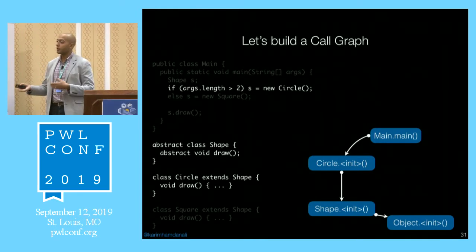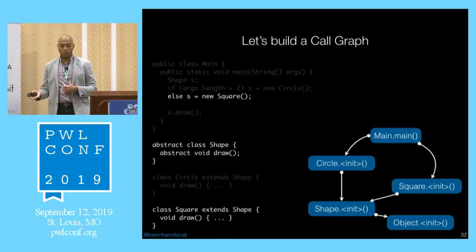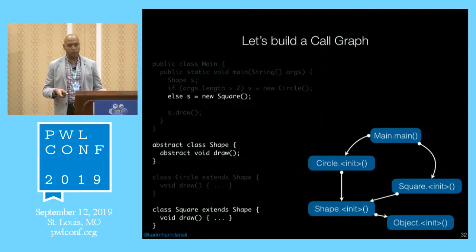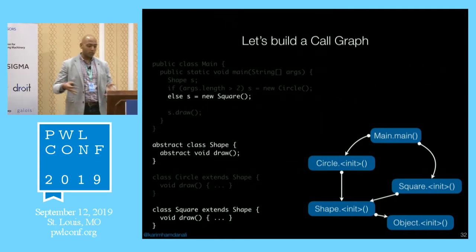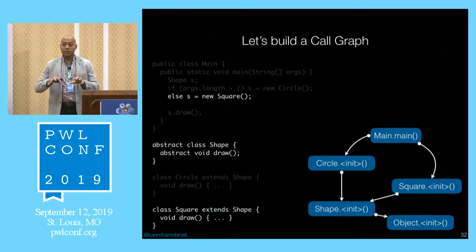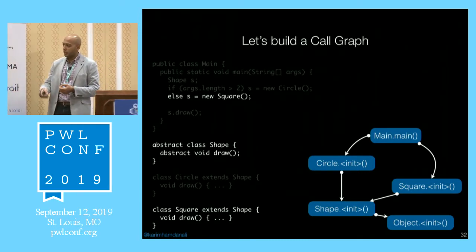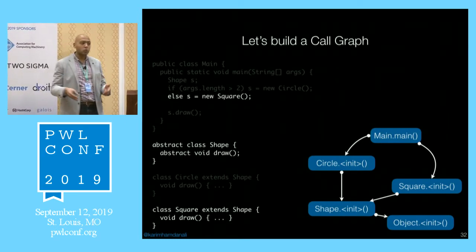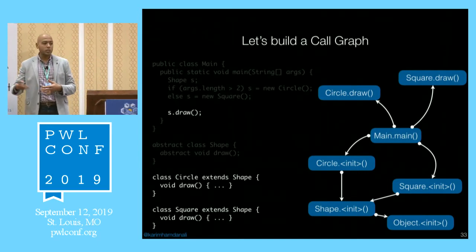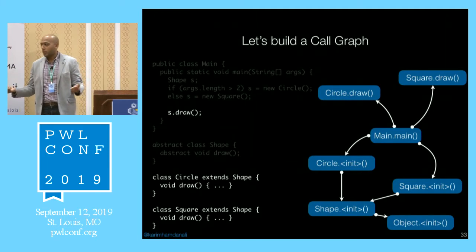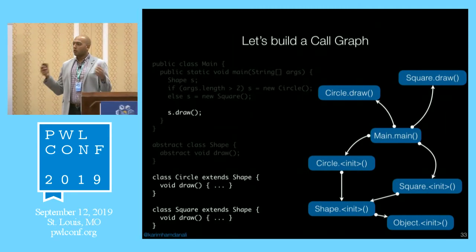Because we do program analysis, we reason about all possible execution paths. The last statement s.draw — since we have objects of type Circle and Square — the analysis thinks the call could dispatch to either Circle.draw or Square.draw. So we have a call graph for that Java program. We're trying to abstract away from actual runtime behavior by including all possible calls that can happen.